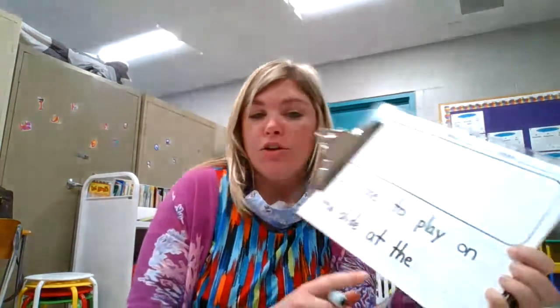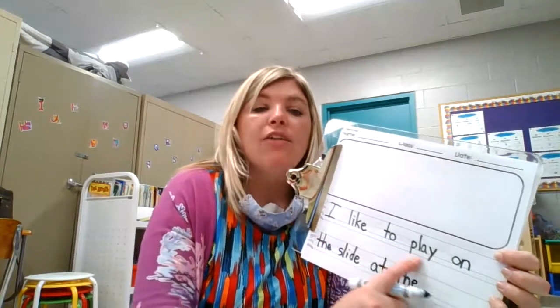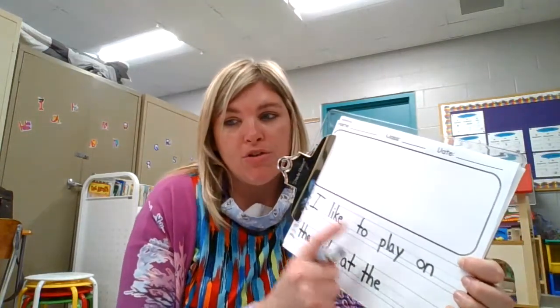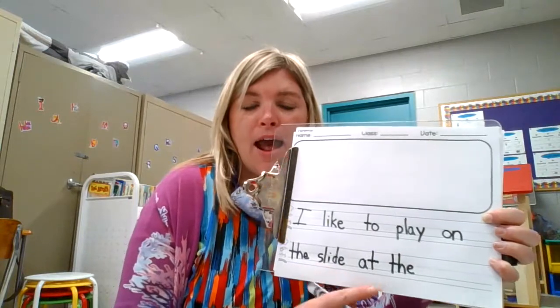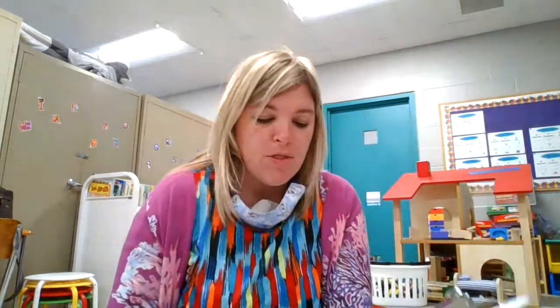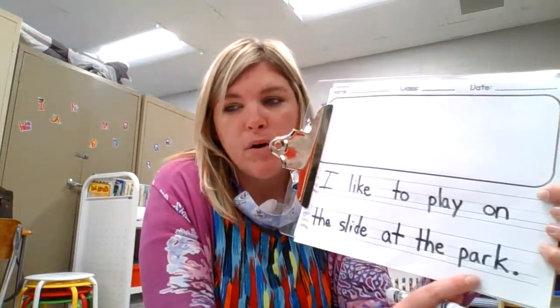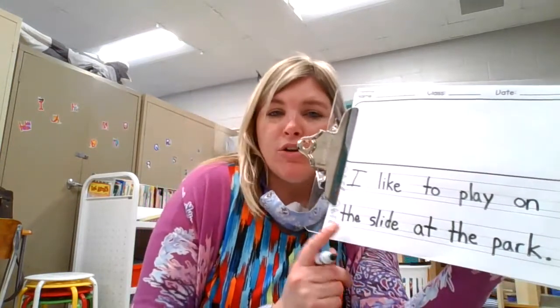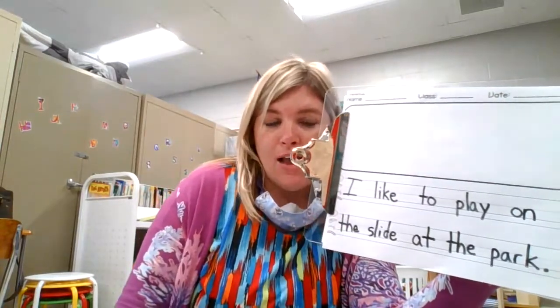Make sure you're using the correct lines when writing. A lot of friends start out with really neat handwriting and then as the sentence gets longer it starts to get sloppier — so keep it neat all the way through! 'I like to play on the slide at the' — then another meatball space and write the word 'park.' Here's how we spell park: P-A-R-K. Great job!